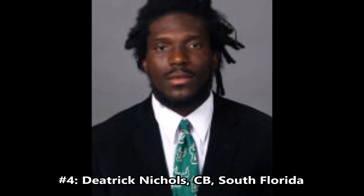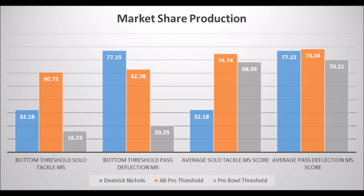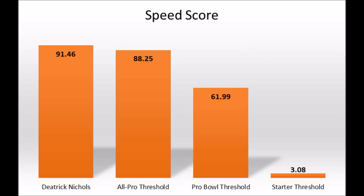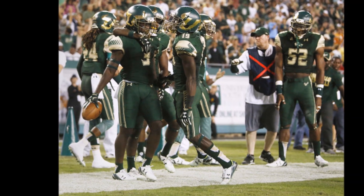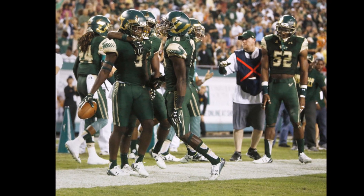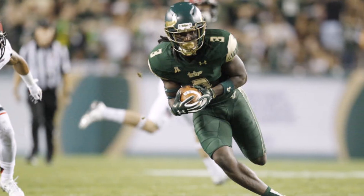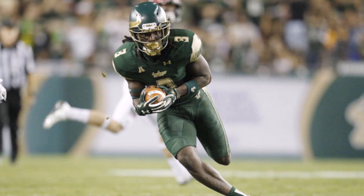At number 4, we have Dietrich Nichols, cornerback out of South Florida. He's 5'10", 189 pounds with a 4.37 40-yard dash. Based on his production, he put up a 32.18 solo tackle market share score, which isn't that impressive, but he does have a 77.15 pass deflection score, which is very good and hits all the levels for Pro Bowl potential. The reason he's number 4 is because of his speed score — a 91.46 overall speed score. Running 4.37 is very impressive. He just needs to improve his solo tackle market share production, and if he does, he could be seen as a much higher prospect. But overall, he's a good profile with lots of potential.